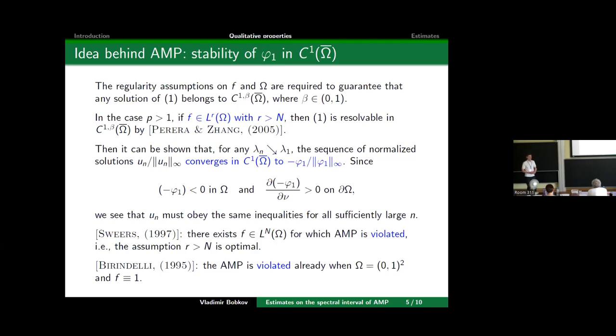One can ask: can we relax the assumptions on f and on Ω, the regularity assumptions? Actually, it seems to be not. For instance, it was shown by Sweers that there exists f in the space L^n through which the anti-maximum principle is violated, so that assumption r greater than n is optimal, at least in the scale of Lebesgue spaces. Concerning the boundary regularity, Brandolini proved that the anti-maximum principle is violated already when Ω is a square and f is identically constant. At corners of the square, basically the function will change sign, which is a contradiction to the anti-maximum principle.